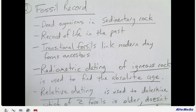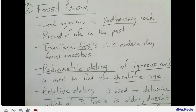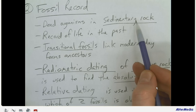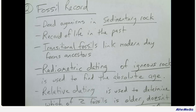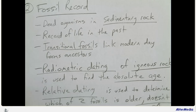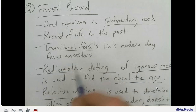For your notes on the fossil record: dead organisms are found in sedimentary rock. Igneous and metamorphic rock are too destructive to preserve fossils, but sedimentary rock — formed by gluing together little pieces of sand and other material — is a gentle process. Once bacteria have eaten away the fleshy parts of an organism, what's left are the bones, which are then replaced by minerals over time. Things like iron oxide leave an impression of the hard parts. It's a record of life in the past, and transitional fossils link modern-day forms to their ancestors.